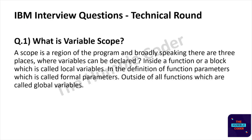The first question is: what is variable scope? A scope is a region of the program. Broadly speaking, there are three places where variables can be declared: inside a function or block, which are called local variables; in function parameter definitions, which are called formal parameters; and outside of functions, which are called global variables.